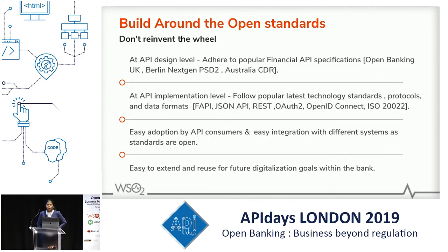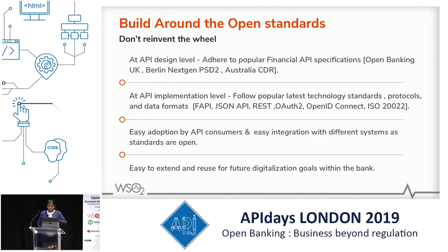Banks need to think about APIs being self-descriptive and aligned to the business use case. There are several business use cases like exposing account information data, doing real-time payments, or checking for funds. The API description needs to align with these use cases. When going to implementation, it's really important to not reinvent the wheel — there are popular and well-established open standards available in the market that should be reused.